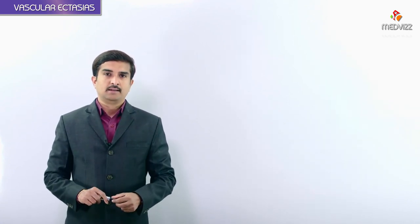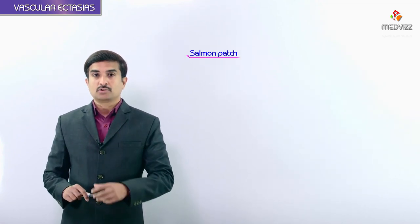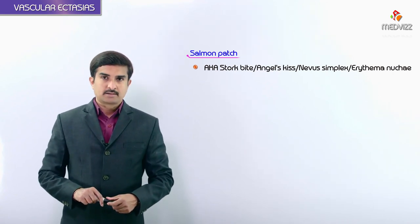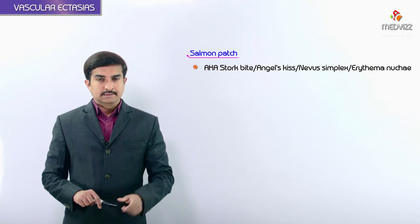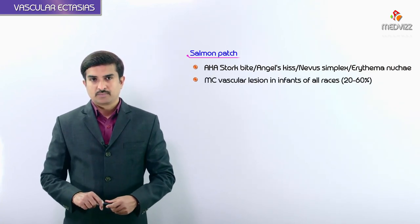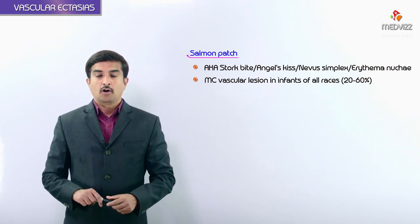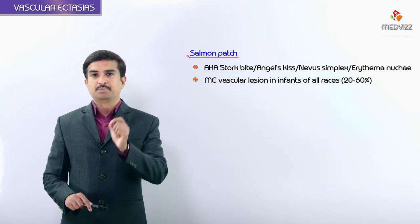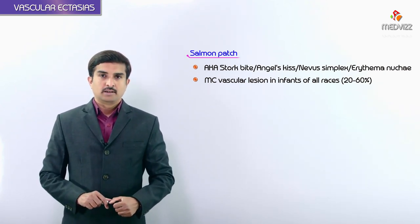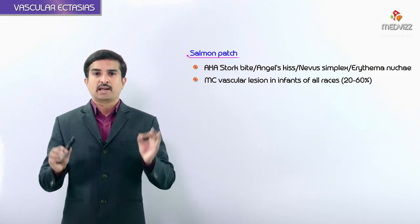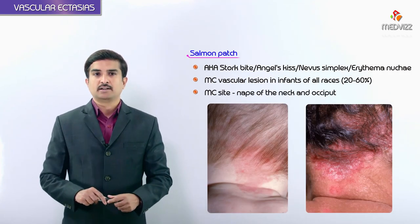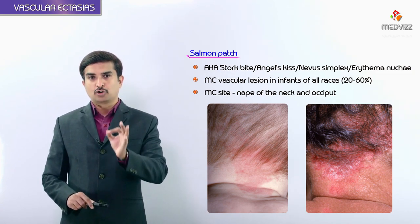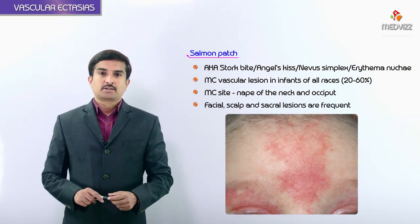The next type is the salmon patch, also known as the stork bite, nevus simplex, or erythema nuchae. It is the most common vascular lesion seen in infants of all races, comprising about 20 to 60 percent of vascular ectasias. The most common anatomical sites are the nape of the neck and occiput.